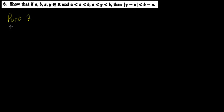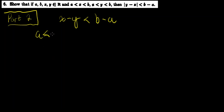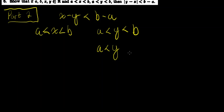Let's clear the board to prove part two in a very similar way. Part two: we want to show that X minus Y is strictly less than B minus A. We have A is strictly less than X, which is strictly less than B, and A is strictly less than Y, which is strictly less than B.